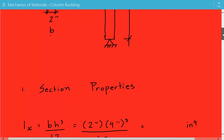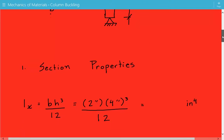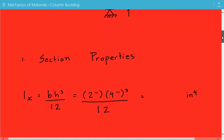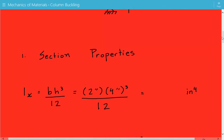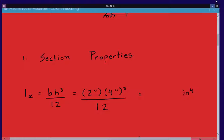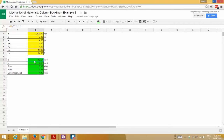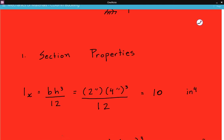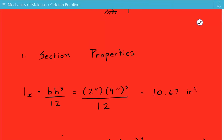First thing we're going to do is calculate the section properties. First is the moment of inertia about the x axis. It's equal to bh cubed over 12, and this comes out to be 10.67 inches to the 4th power.